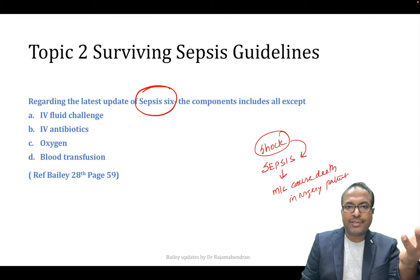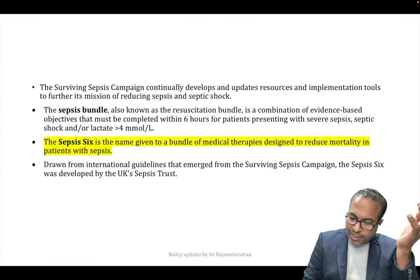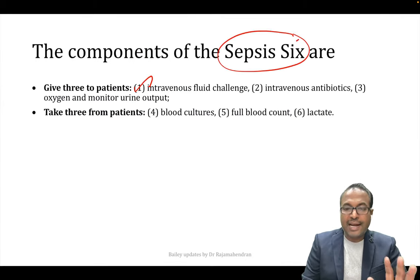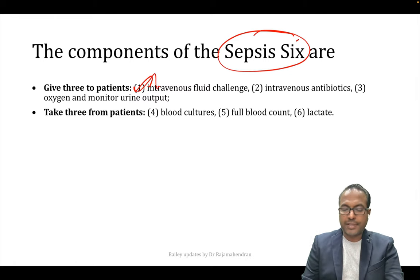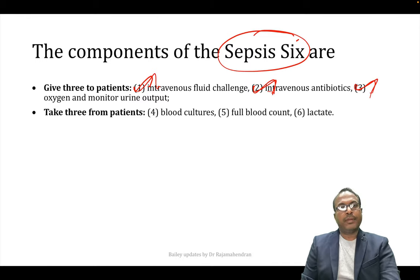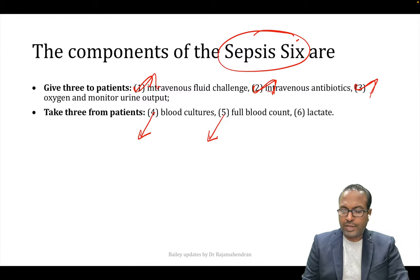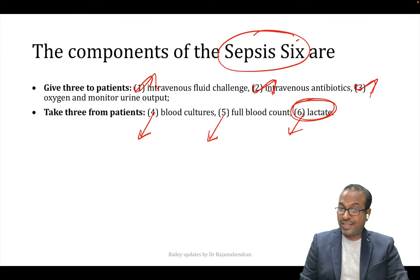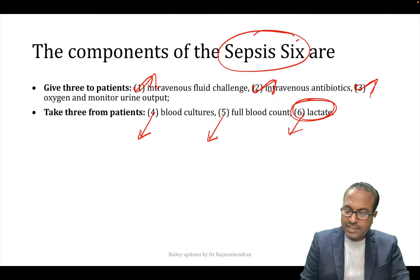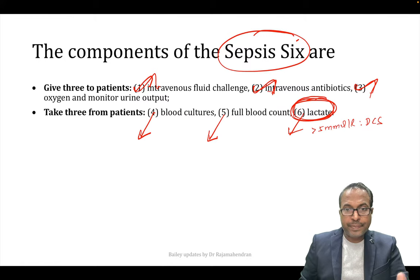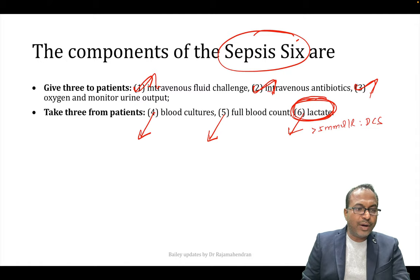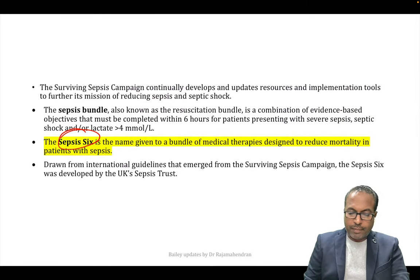Sepsis 6: Give 3, Take 3. What you give: IV fluids, IV antibiotics, and oxygen. What you take from the patient: blood culture, full blood count, and lactate. Lactate is very important — if more than 5 mmol/L, we go for damage control surgery. The sepsis bundle, also known as the resuscitation bundle, must be completed within 6 hours in patients with severe sepsis, septic shock, or lactate more than 4 mmol/L.